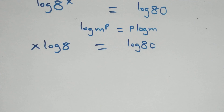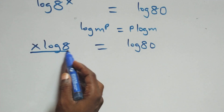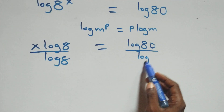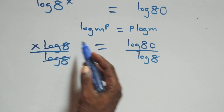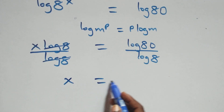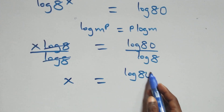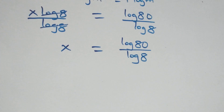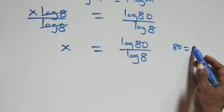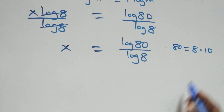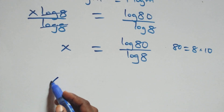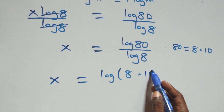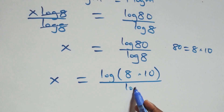The next step: we divide both sides by log 8. Log 8 cancels on the left side and we have x equals to log 80 over log 8. Then we can rewrite 80 as 8 times 10, so x equals to log(8 × 10) over log 8.